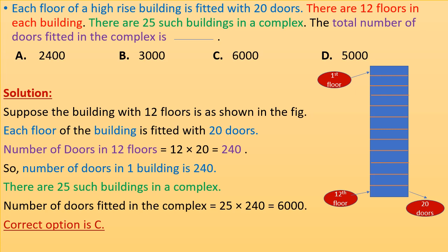The next question: each floor of a high-rise building is fitted with 20 doors. There are 12 floors in each building and 25 such buildings in a complex. The total number of doors fitted in the complex is — suppose the building with 12 floors is as shown in the figure.